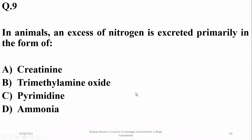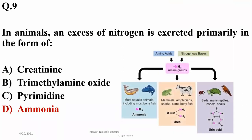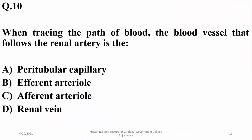In the nephron, juxtamedullary nephrons have longer loops with a surrounding blood supply known as vasa recta. In animals, excess nitrogen is excreted primarily in the form of ammonia because most invertebrates and aquatic life forms excrete ammonia as their major waste product.